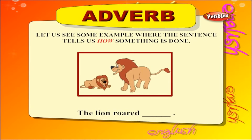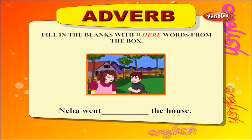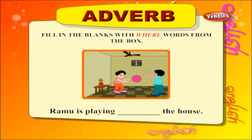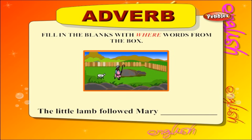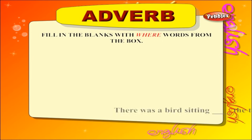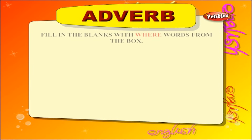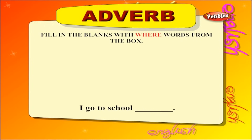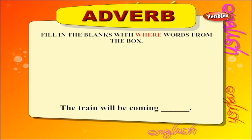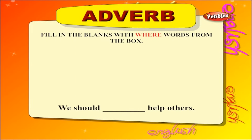Now let us see some examples where the sentence tells us when something is done: 'I went to the hospital yesterday.' 'I am going to Delhi tomorrow.' 'I go to school daily.' 'The train will be coming late.' 'We should always help others.'